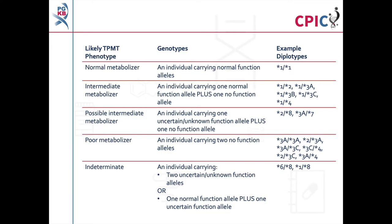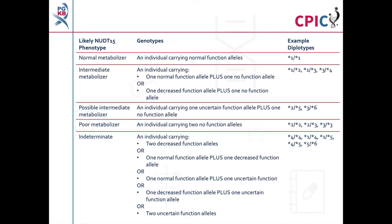Patients can be assigned a TPMT metabolizer phenotype based on the functional status of their TPMT alleles. This table shows the different metabolizer phenotypes that can be assigned, along with example diplotypes. This information can also be found in Table 1 of the guideline. Metabolizer phenotypes can also be assigned to NUDT15 diplotypes, as shown in this table adapted from Table 1 of the guideline.